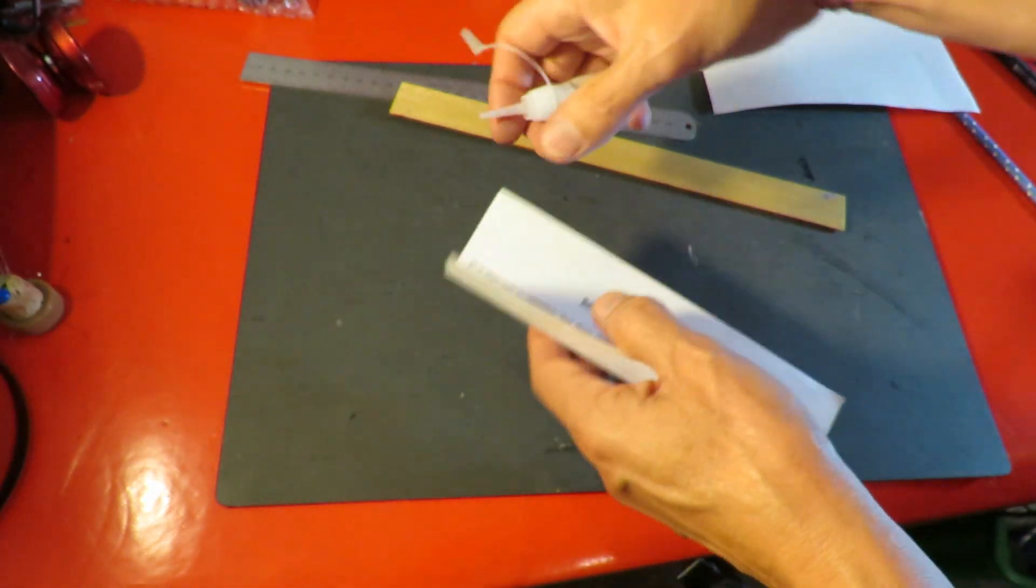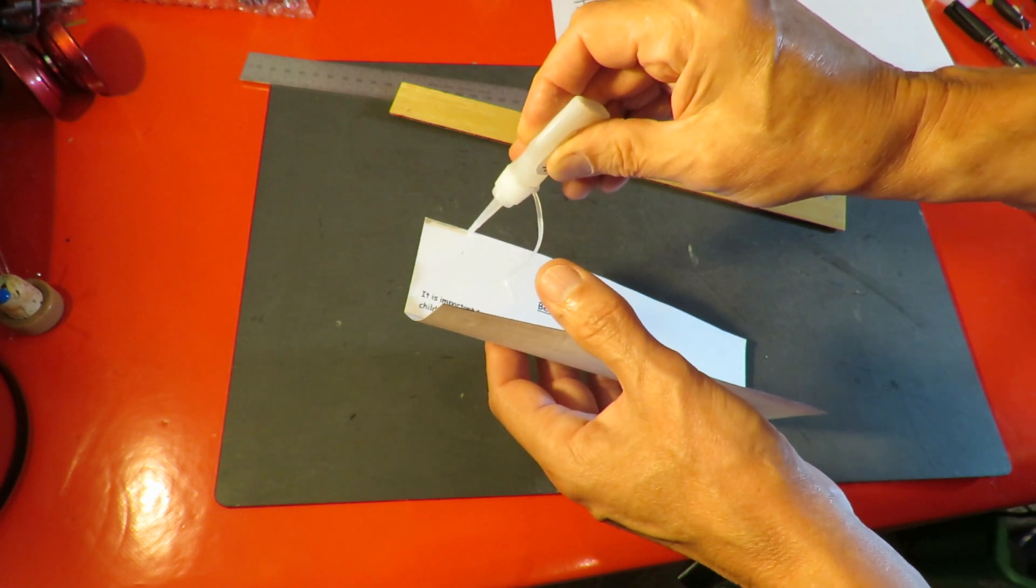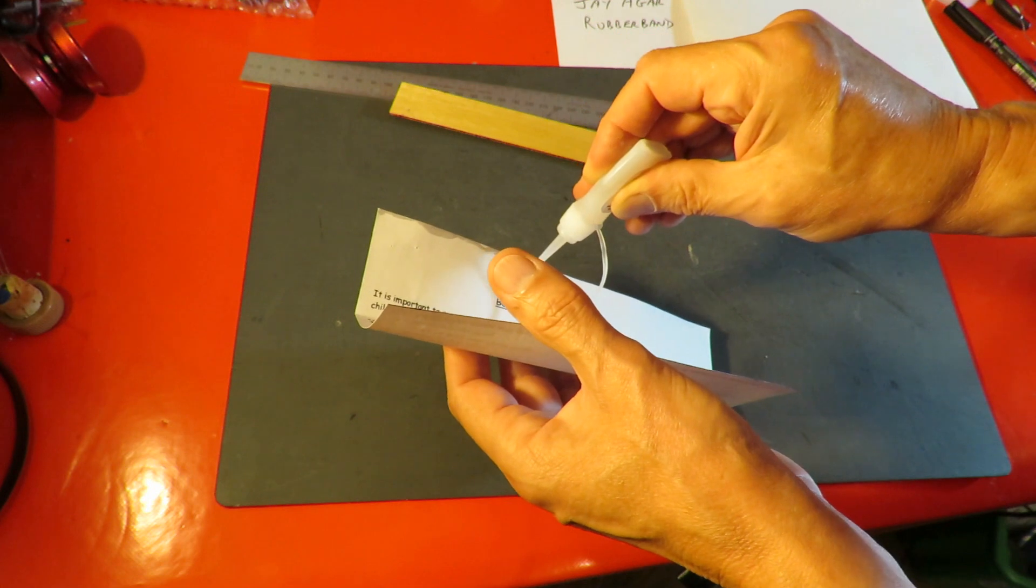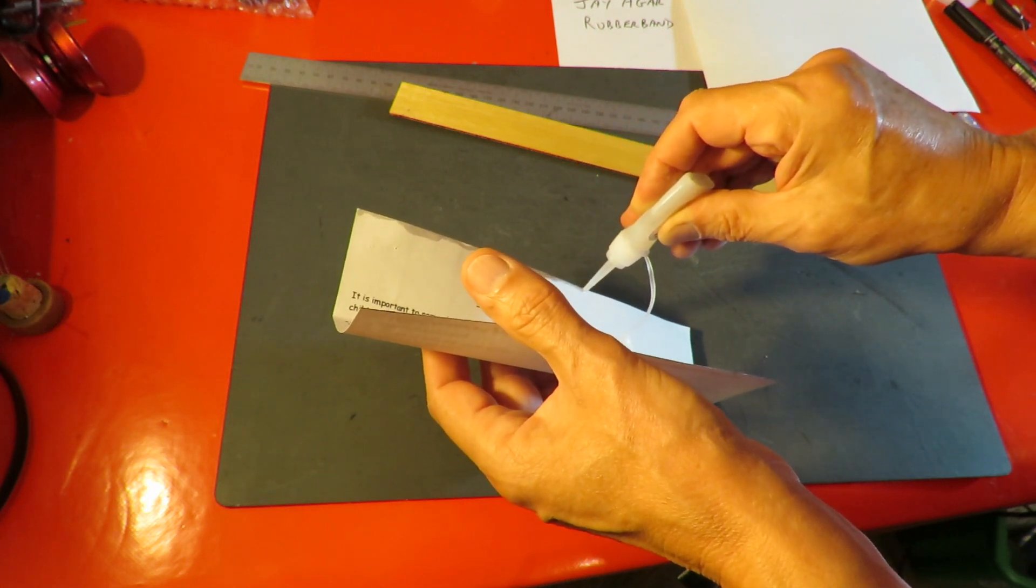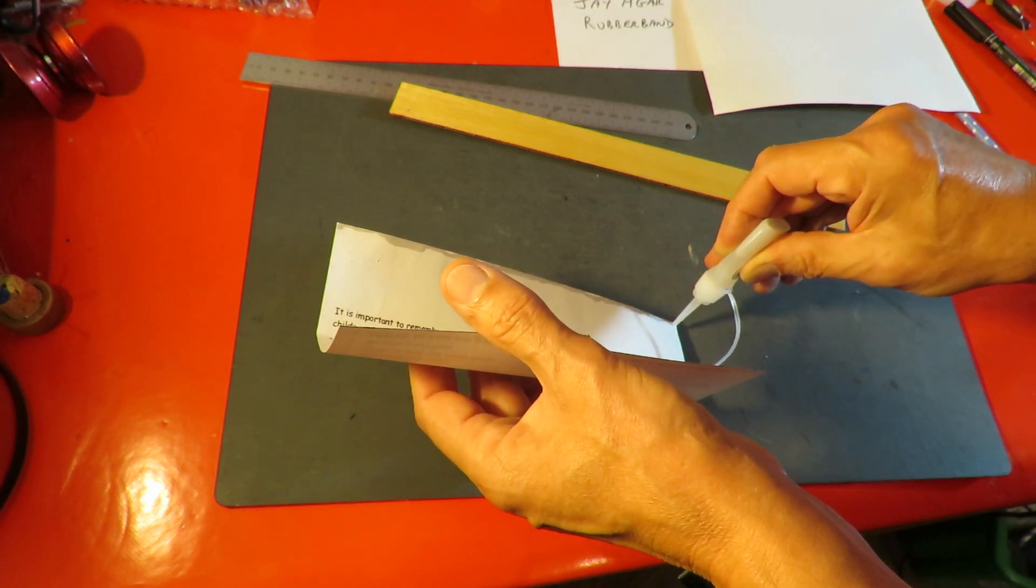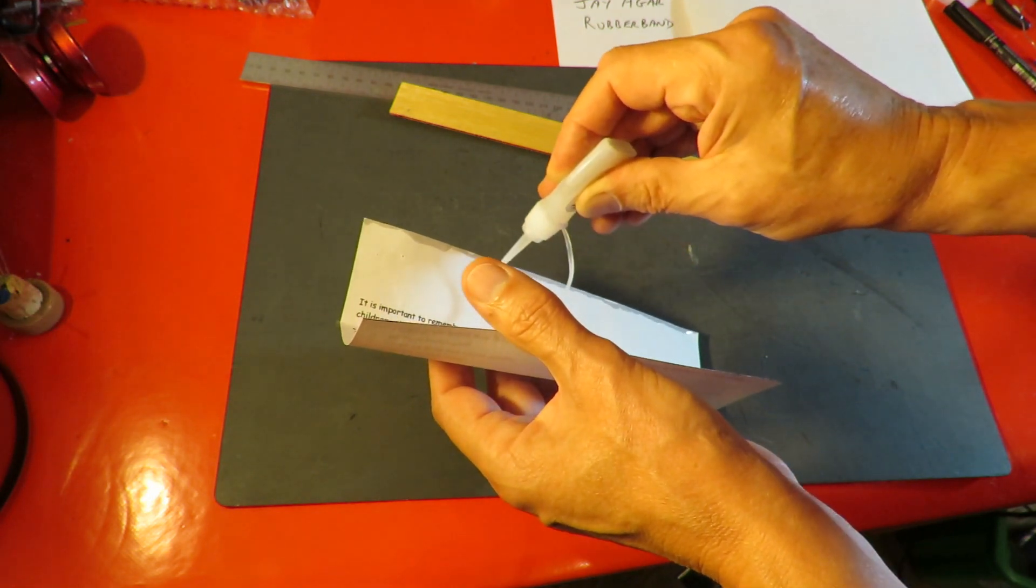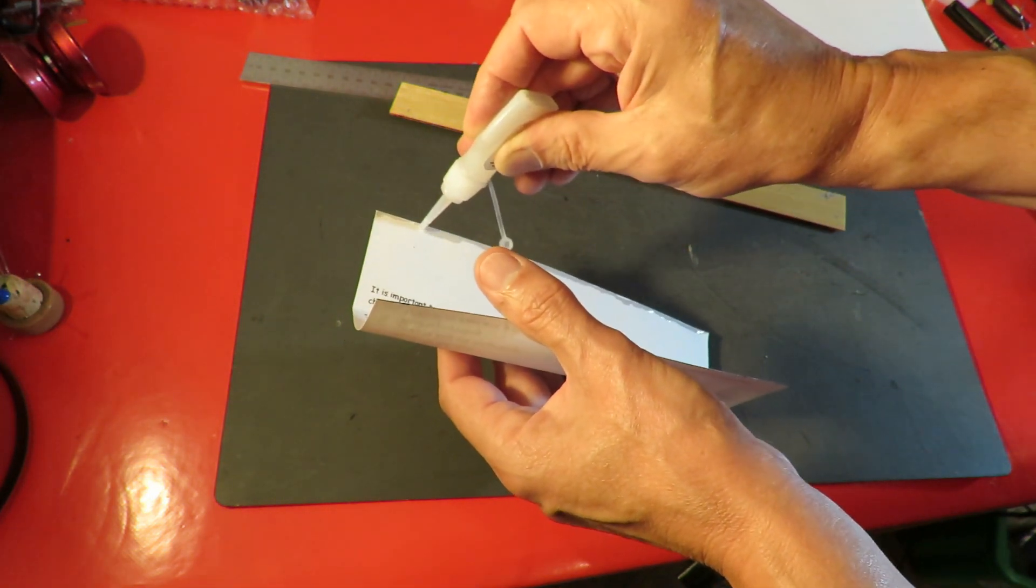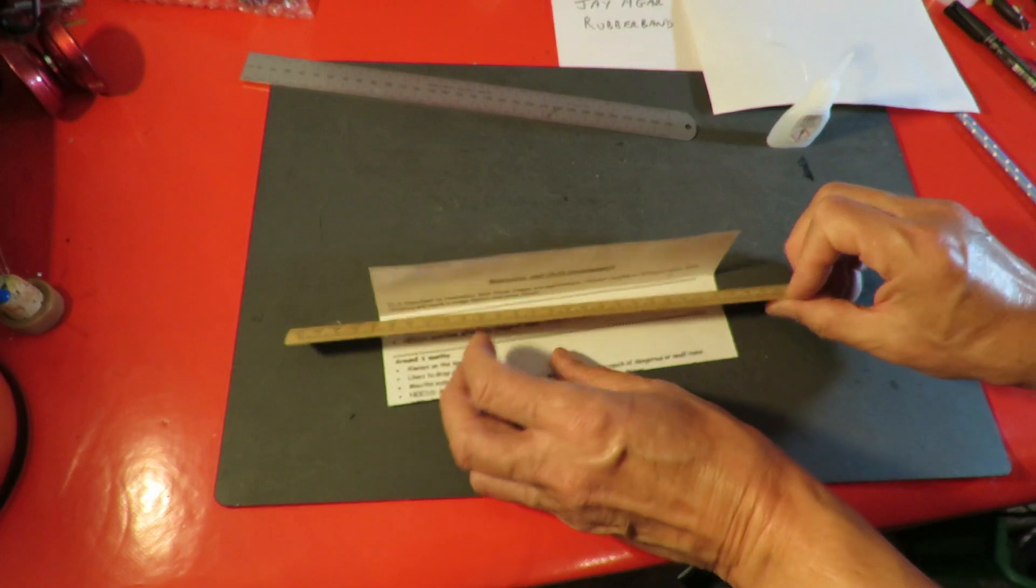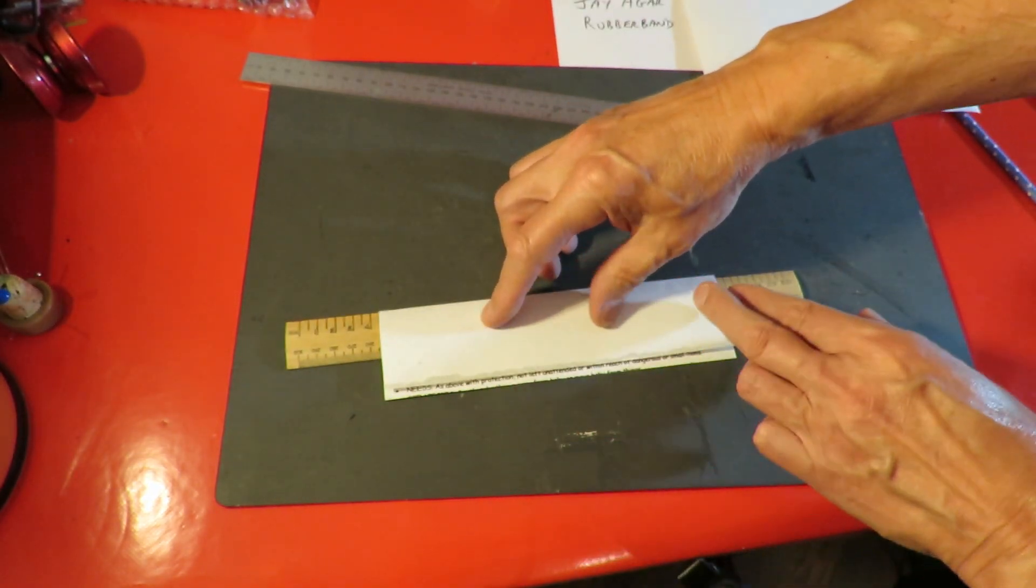I hate super glue, I always stick my fingers together with it. I'm being generous because the idea is it'll dry out and it'll stiffen up the paper, but at the same time you're liable to get your fingers stuck together.